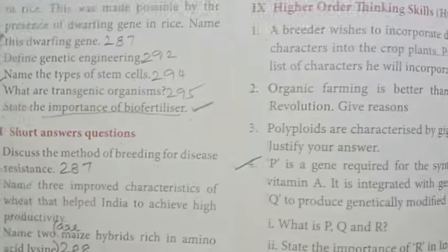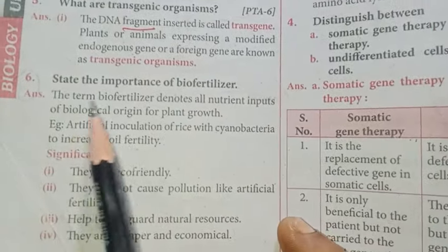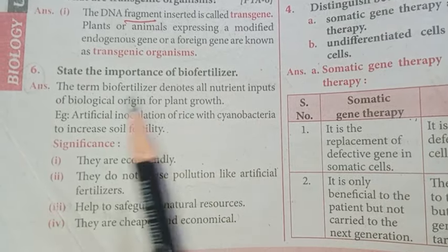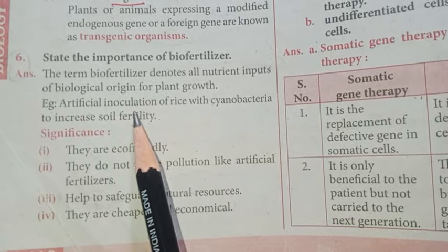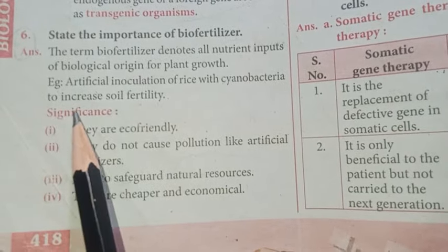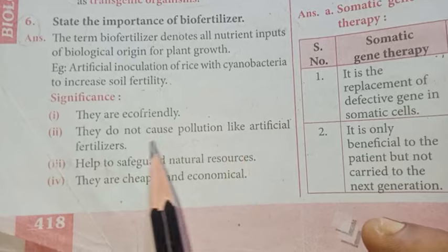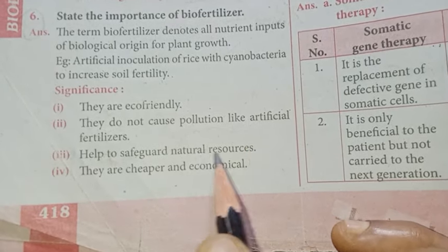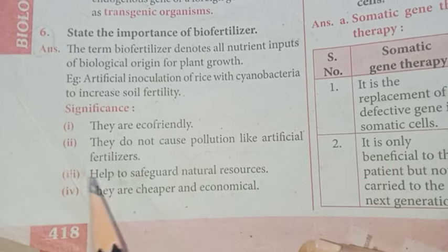State the importance of biofertilizers. The term biofertilizer denotes all nutrient inputs of biological origin for plant growth. Example: artificial inoculation of rice with cyanobacteria to increase soil fertility. Significance: they are eco-friendly, do not cause pollution like artificial fertilizers, help to safeguard natural resources, and are cheaper and economical.